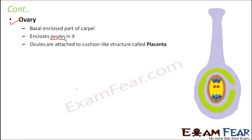Ovules are attached to a cushion-like structure called the placenta. Inside the ovary it is not always necessary that there is just one ovule — the ovary can have many ovules, and these ovules are attached to the ovary through a tissue. That tissue, or cushion-like structure, is known as the placenta. We will see how the placenta can be organized and how its shape can vary from one flower to another.